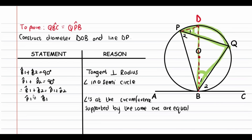Because angle P1 equals angle B1, and we know that angle B1 plus angle B2 equals angle P1 plus P2, it follows that angle B2 must equal angle P2. This completes the key deduction of the proof.